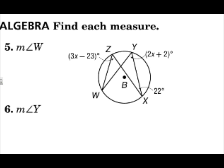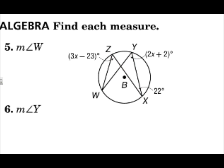Another rule: when you have two inscribed angles that open up to the same arc, they're congruent. So angle Z and angle Y both open up to arc WX, meaning those two angle measures are congruent. I can find x and then use x to find the measure of angle Y.